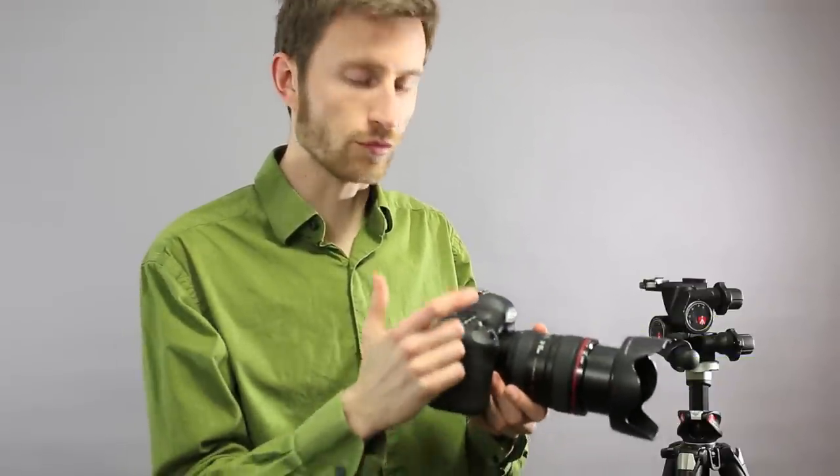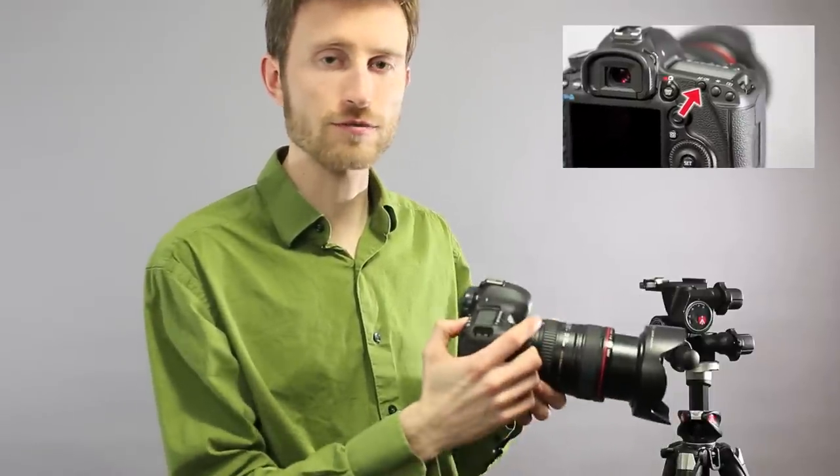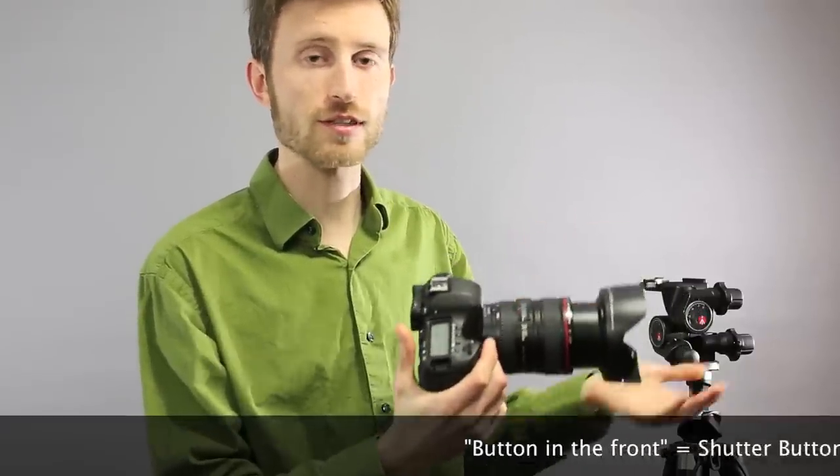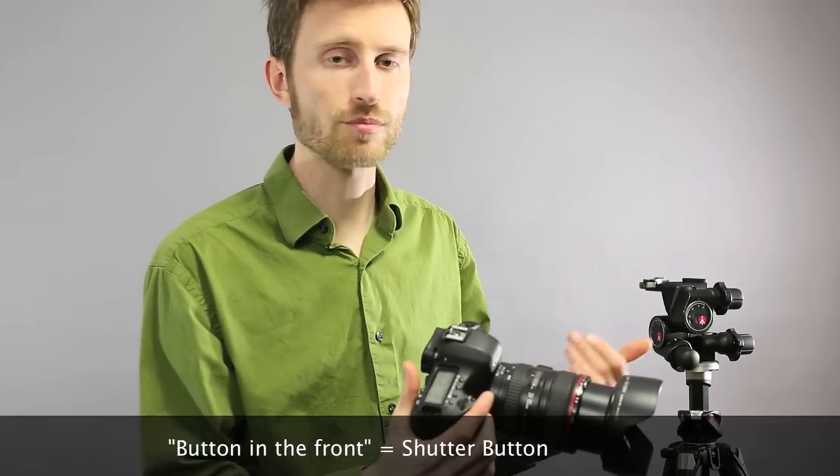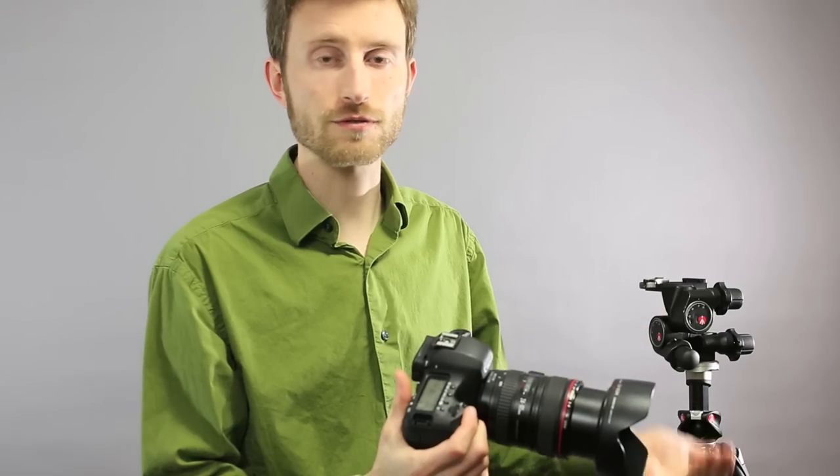But it does have the option where when you press the button down, it'll take the picture regardless even if it's just slightly out of focus. Now you can press this button on the back here to autofocus and then you can press this button in the front to actually take the picture. They can be controlled separately. You can have the button in the front take the picture regardless if it's in focus or not and the one in the back autofocus.